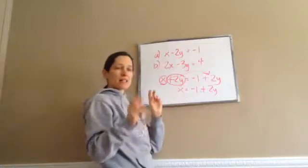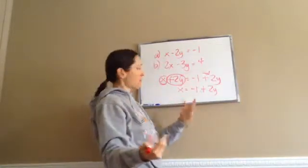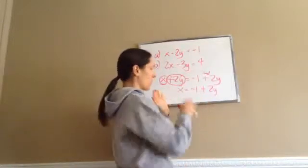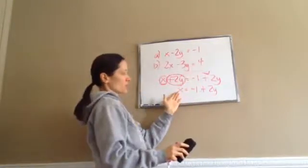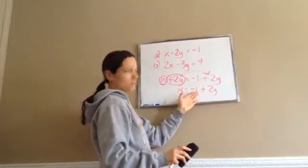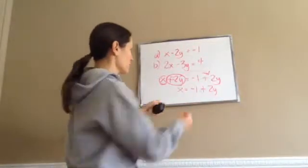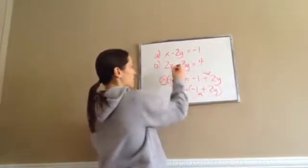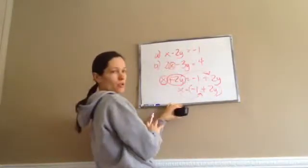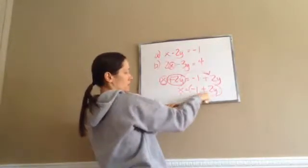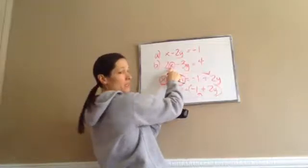Now we have a semi-answer — we found what x equals in terms of y. We don't know exactly what x equals yet, but this is what you needed to rearrange so you could substitute. Now take that x answer, negative 1 plus 2y, and put it into the other equation. Since we used equation A to find x, we put it into equation B.